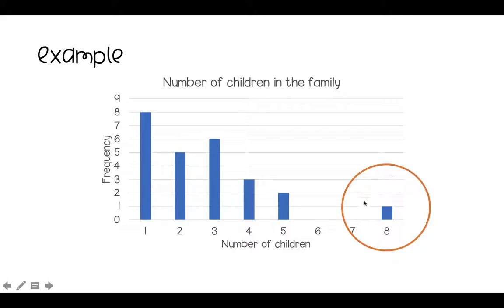So we call this our outlier. Now the reason we talk about outliers is it can really change the shape of our data, especially with our mean, it can really change the position of our mean. So it's important to be able to identify our outliers.